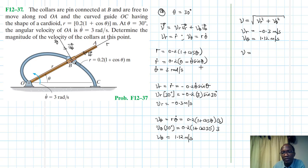Therefore, this equals √(0.3² + 1.12²) = 1.16 m/s. That's the velocity of the collars at θ = 30°.